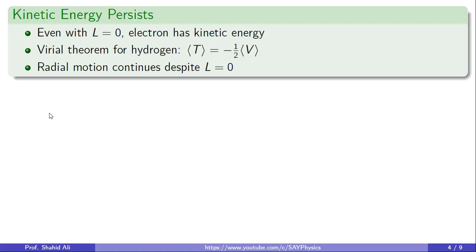Let us now address the core confusion. If L is equal to 0, does that mean the electron has no energy or motion? The answer is a resounding no. As shown in the first block, even with zero angular momentum, the electron still possesses kinetic energy. This is backed by the Virial theorem in quantum mechanics. Specifically for the hydrogen atom, it tells us that the average kinetic energy is minus half the average potential energy. So as long as there is potential energy, which there is due to the attractive force of the nucleus, there must be non-zero kinetic energy.